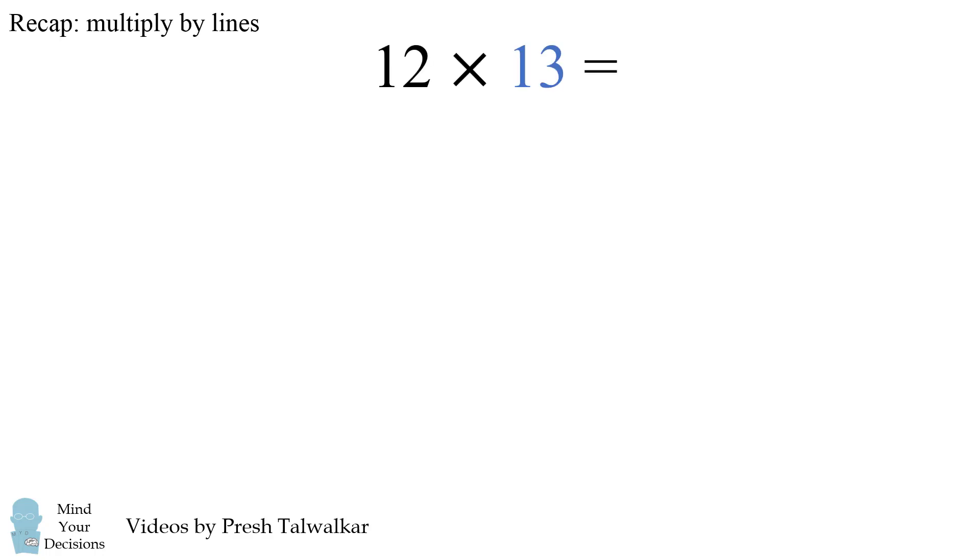Let's say you want to multiply 12 by 13. For the 1 in 12, we'll draw one line. For the 2 in 12, we'll leave some space and then we'll draw two lines.